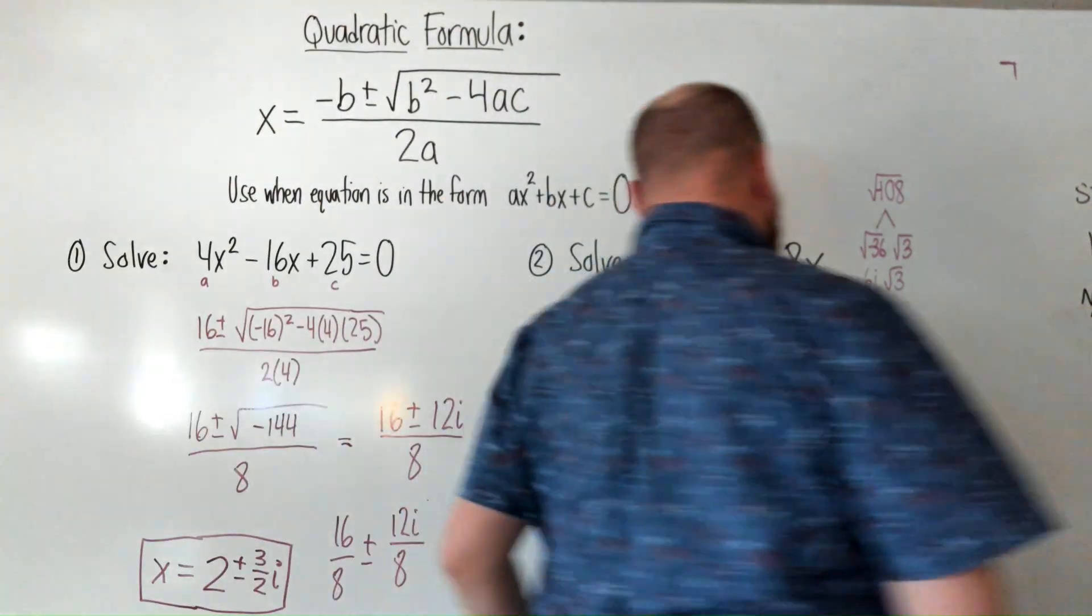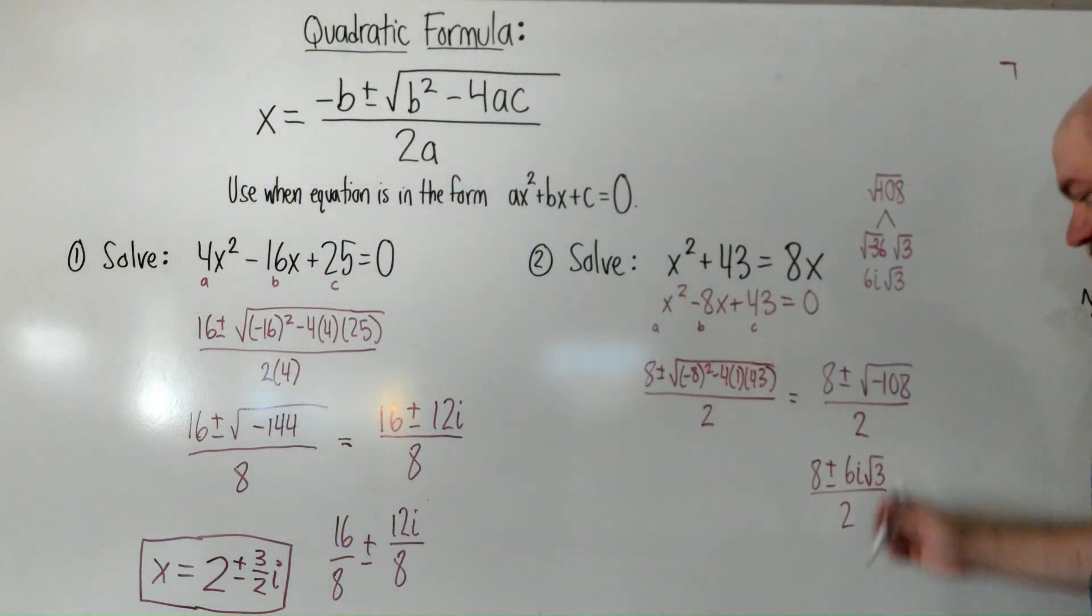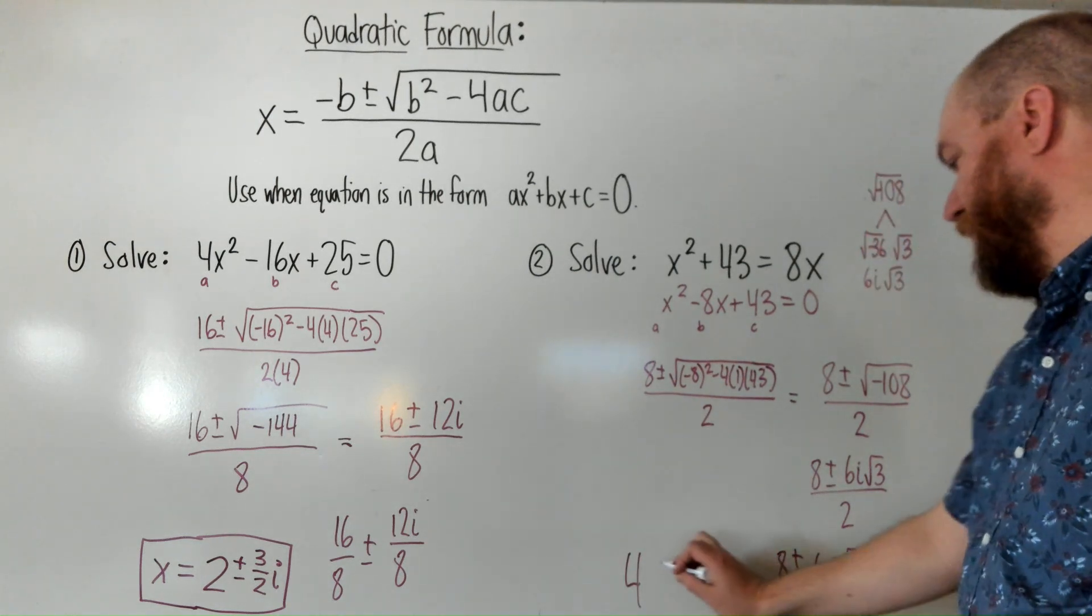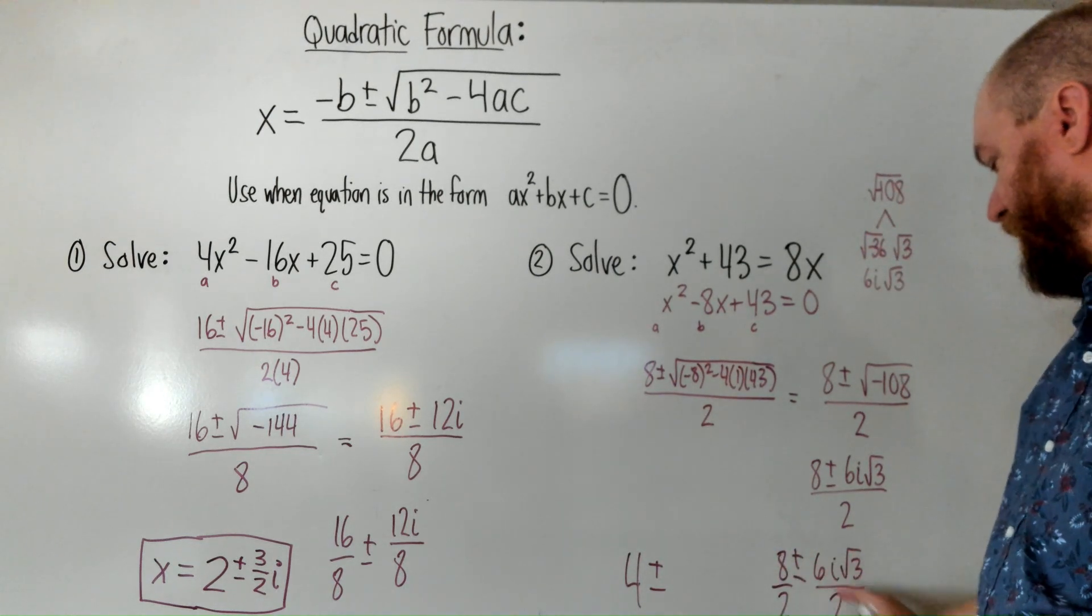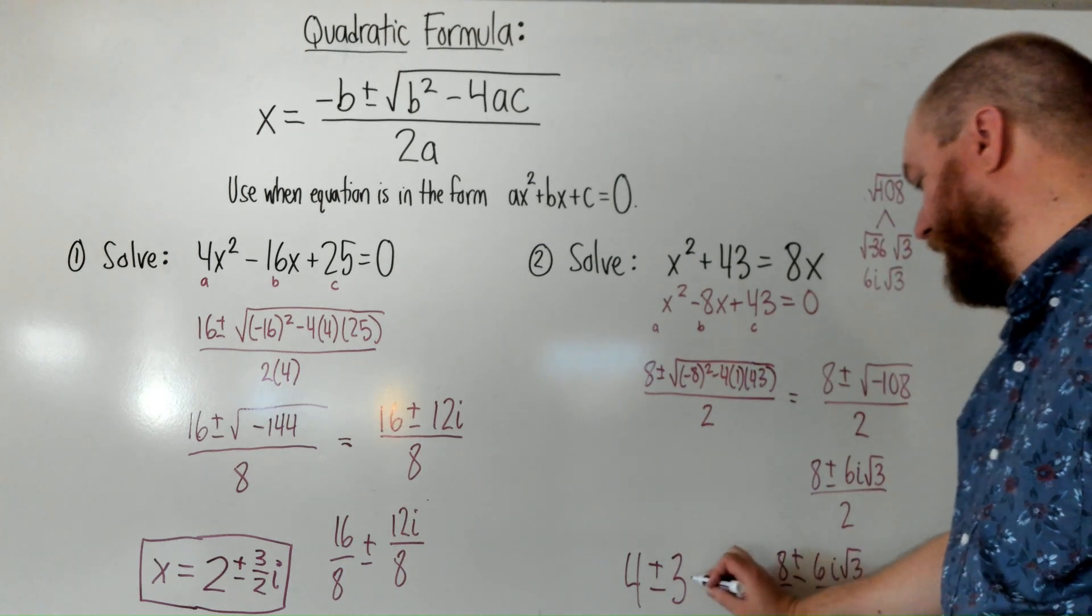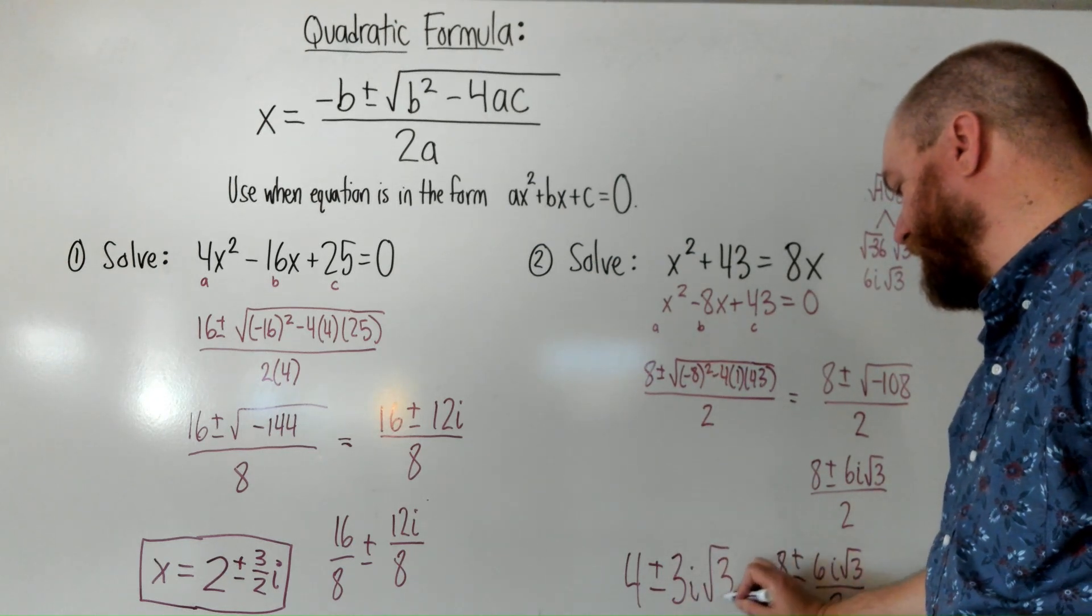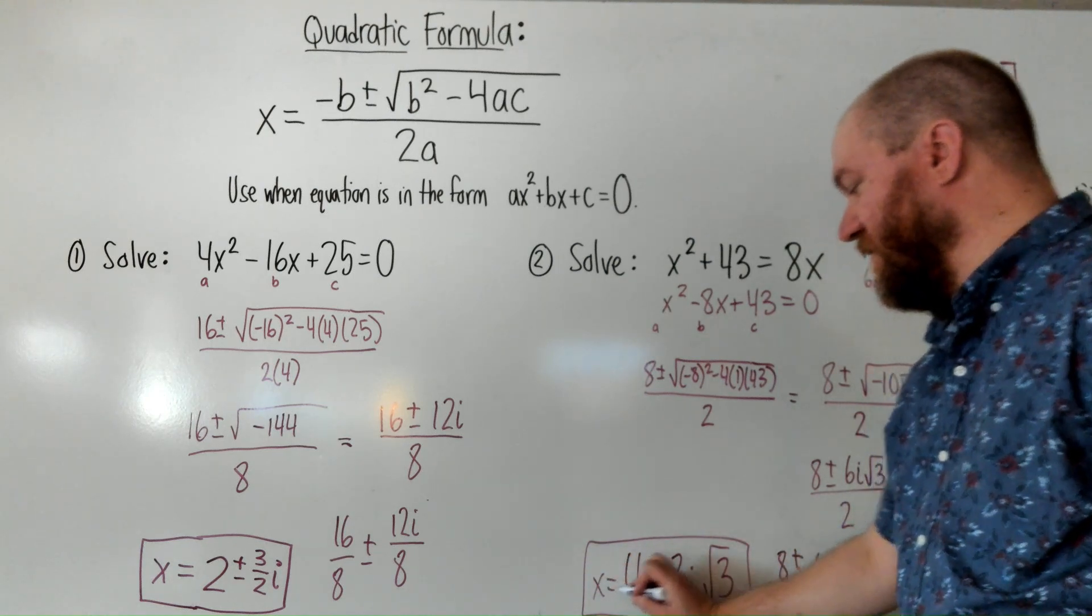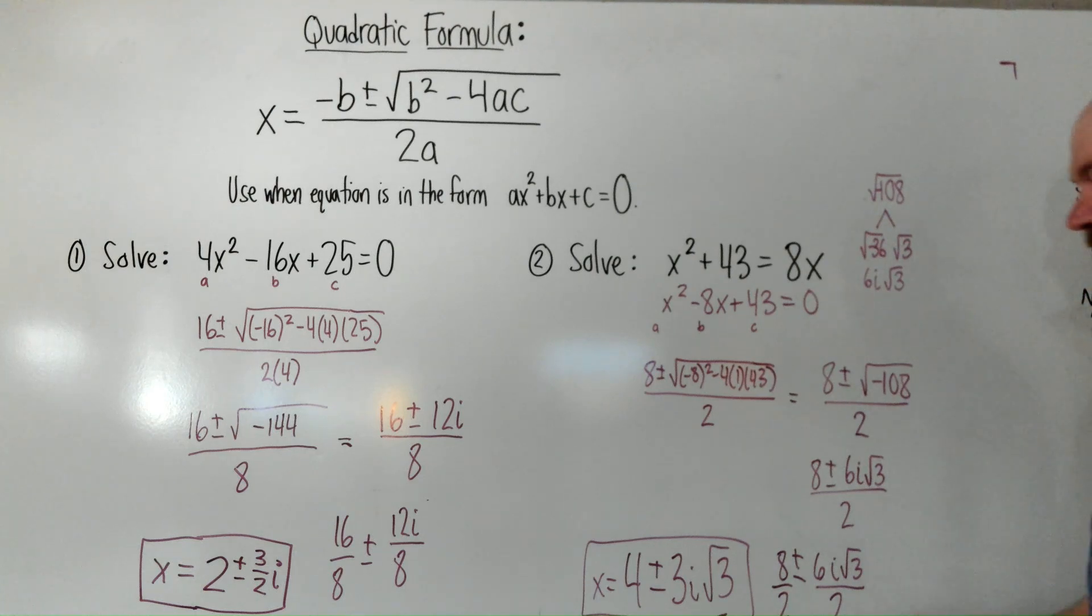And just like the last step here, we're just going to split this into two fractions. 8 over 2 plus or minus 6i radical 3 all over 2. And then, let's simplify this. 8 over 2 is 4 plus or minus 6 over 2 is 3. And i radical 3 just gets carried along. So, our answer to this question is x equals 4 plus or minus 3i radical 3.